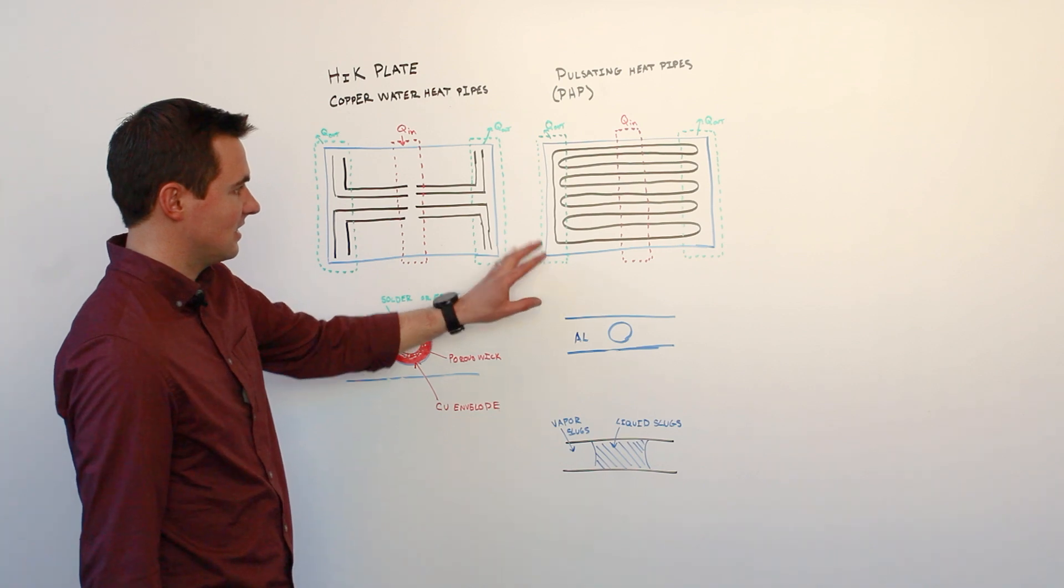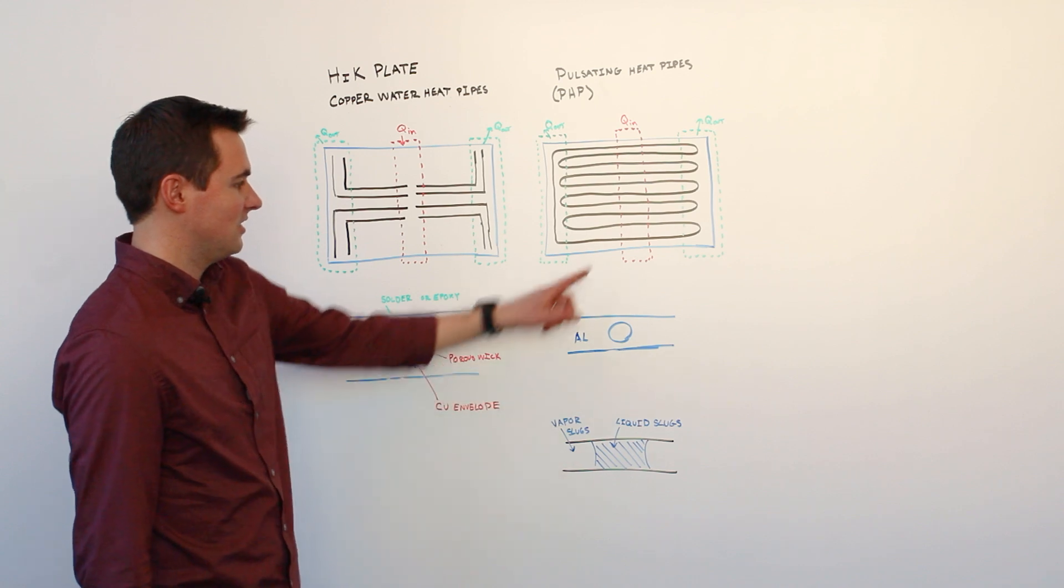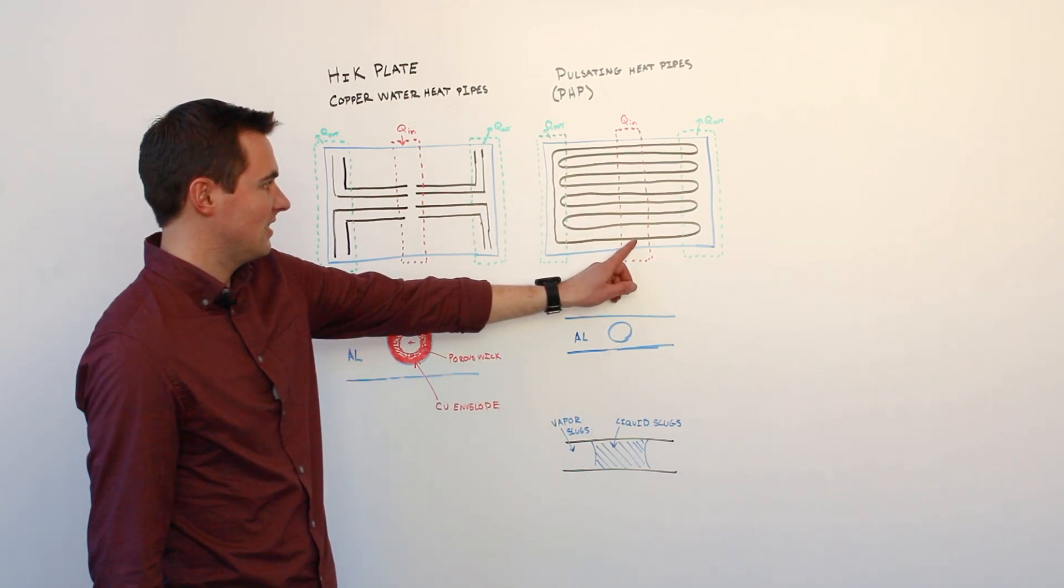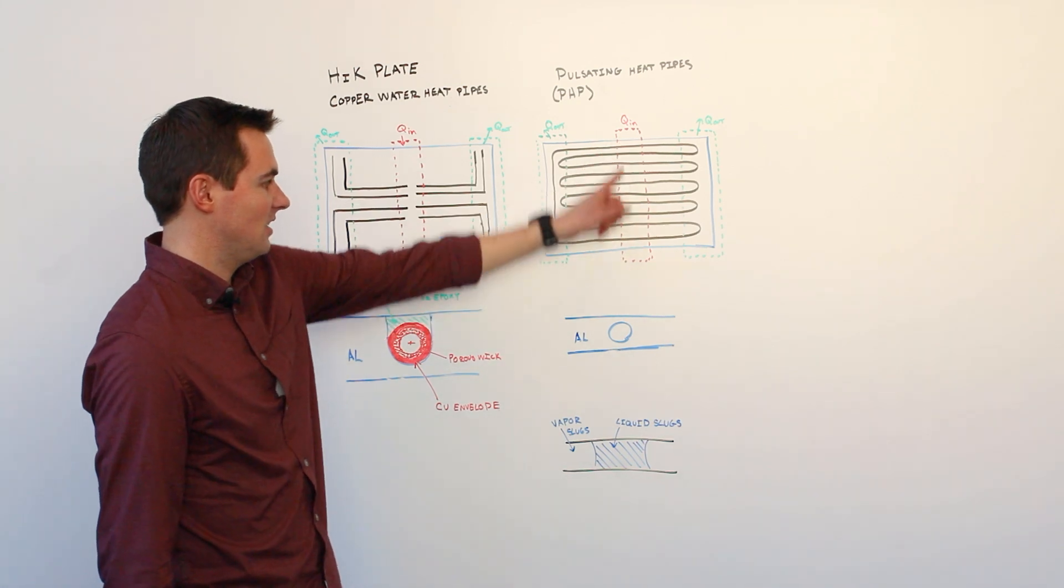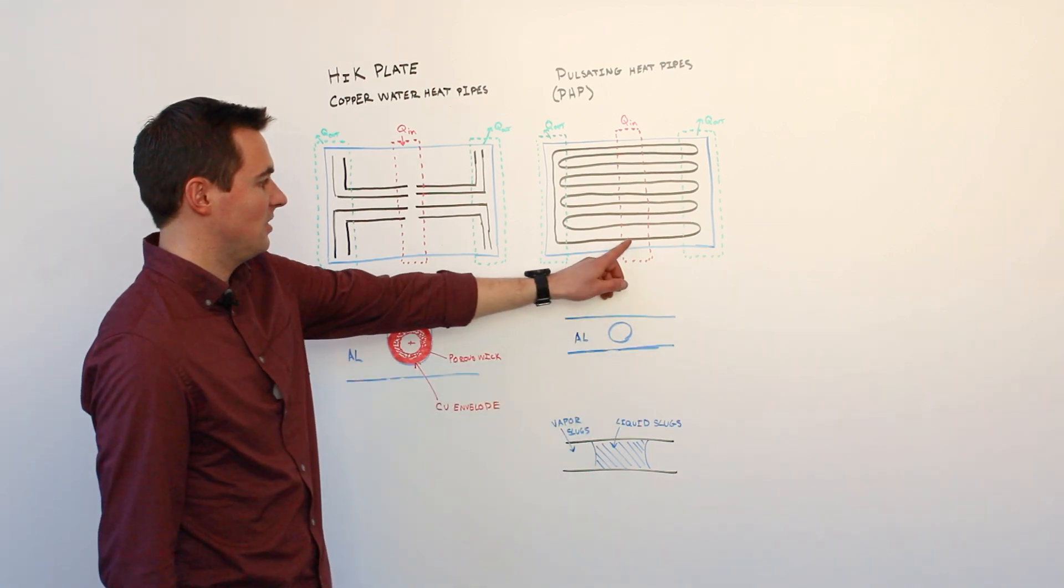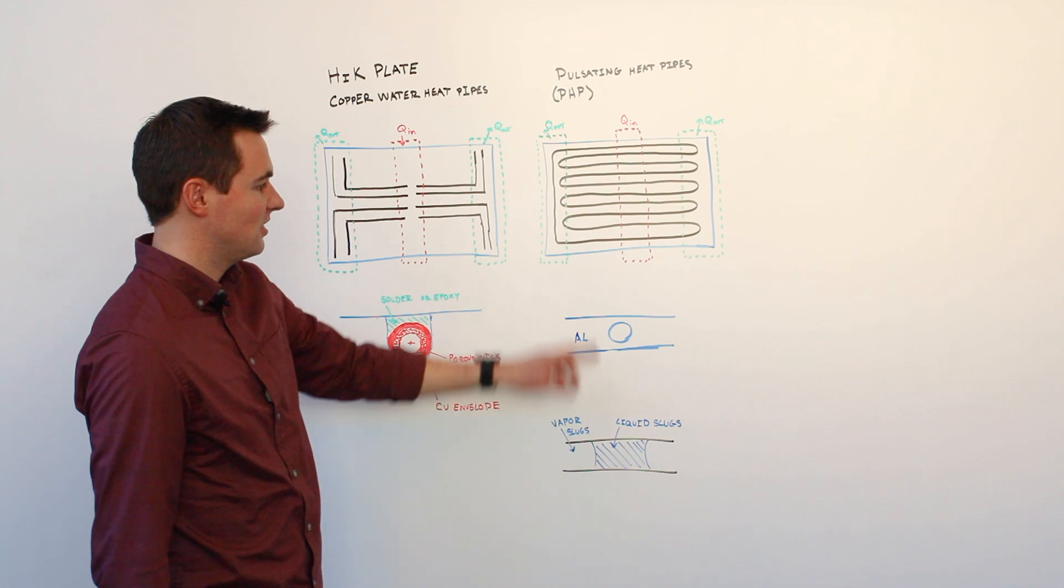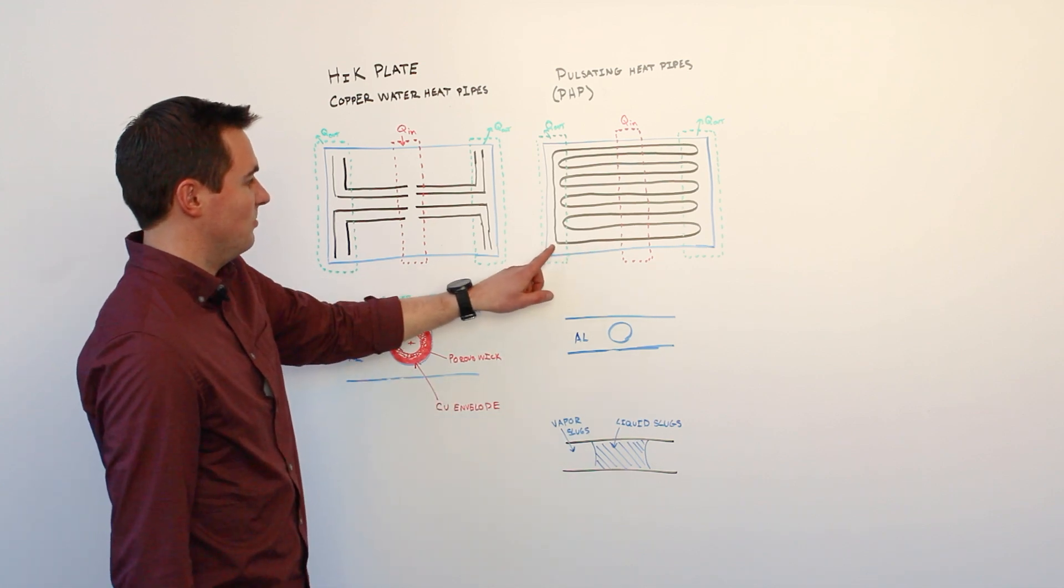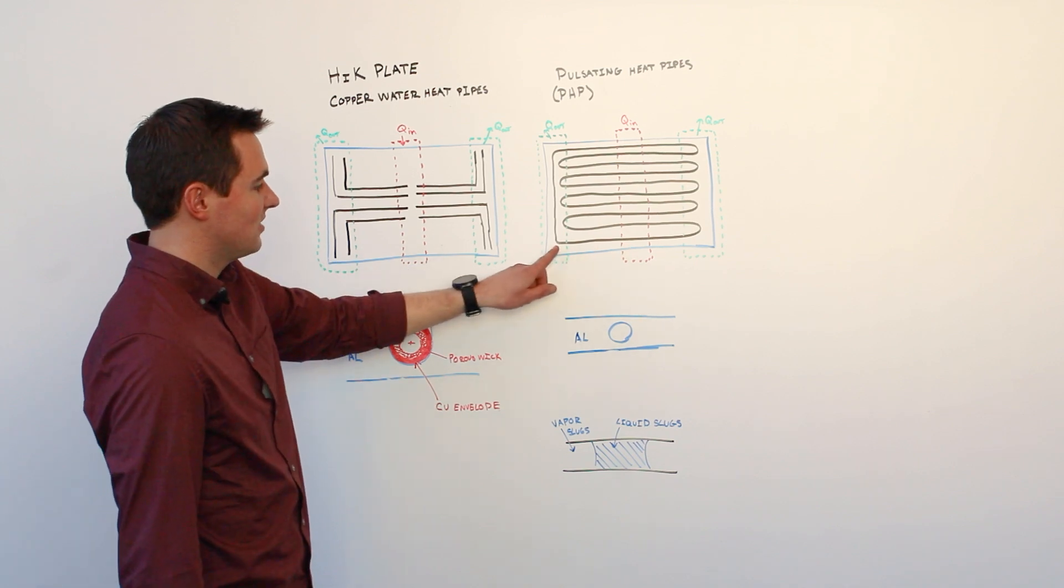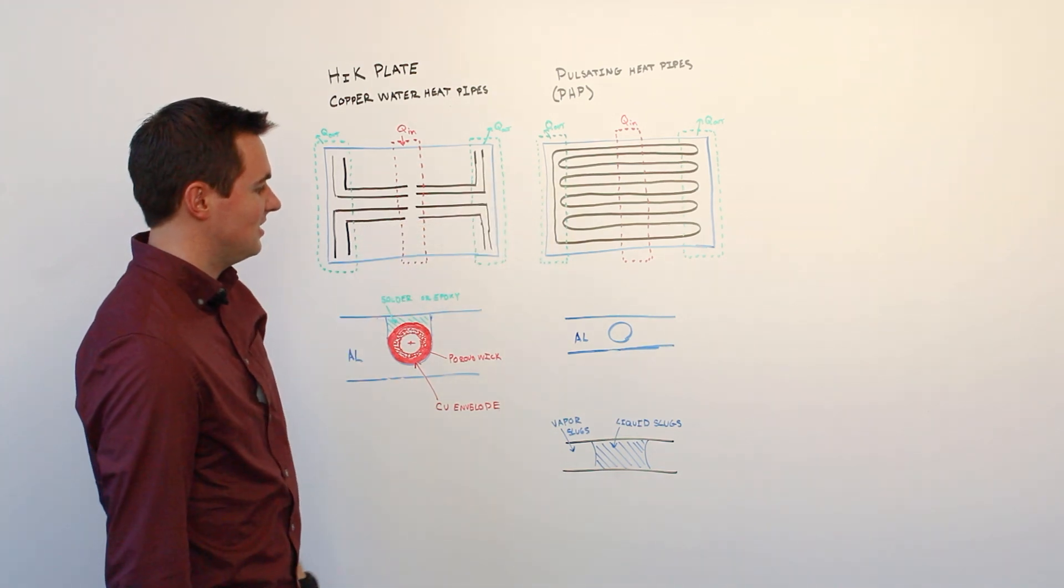This technology works somewhat differently where we have liquid slugs and vapor slugs distributed throughout the channel. When liquid slugs occupy this region in the evaporator, some of this liquid will vaporize causing high pressure which pushes other liquid slugs to the cold side and therefore transfers heat to your condenser regions.